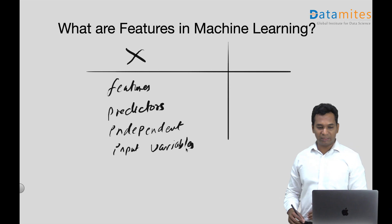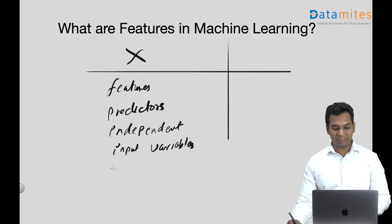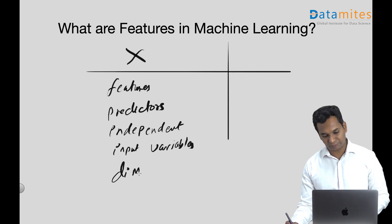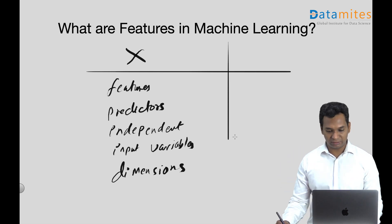All of these mean the same. So features, we even call them dimensions. Features, predictors, independent variables, input variables, dimensions—all mean the same. In different contexts, we use different names. In a similar manner, your Y can be called as output variable.